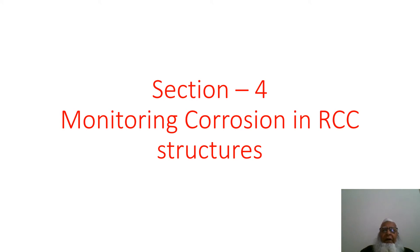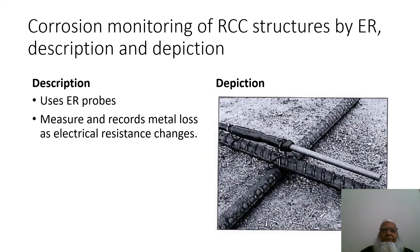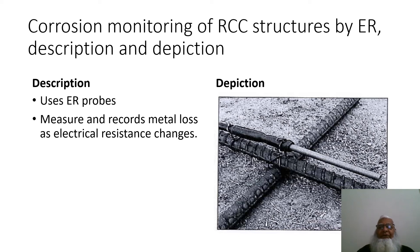Section 4 deals with monitoring corrosion in RCC (Reinforced Concrete) structures. Corrosion monitoring of RCC structures by ER technique uses ER probes that measure and record metal loss as electrical resistance changes. The right-hand side shows where the probes are installed along with the rebars in the concrete.